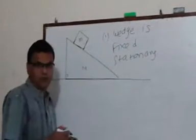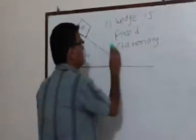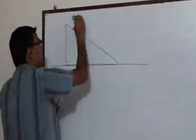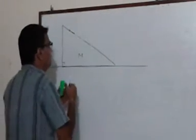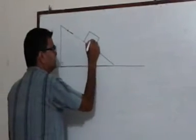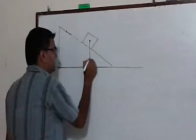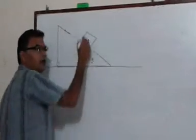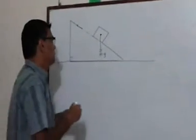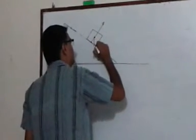Let us understand the various forces acting on this block by drawing its free body diagram. For convenience, let me take this block somewhere in between and draw all the forces acting on it. The first force is the weight of the block, mg, acting vertically downward. And whenever two surfaces are in contact, there is a normal reaction between them, so the wedge exerts a normal reaction N at right angles to the line of contact. Let me take this angle as θ.